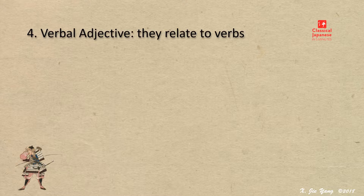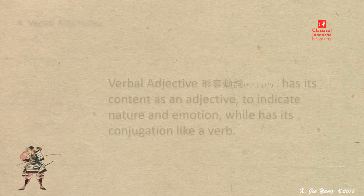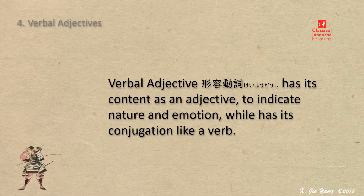This lecture addresses a rather unique part of speech in Japanese: the verbal adjective, or keiyo dōshi. This naming does not necessarily provide a clear and easy hint for understanding. The name indicates they are adjectives but behave like verbs. The Japanese name, however, literally means a verb that behaves like an adjective.